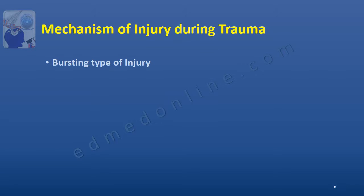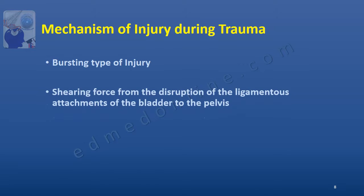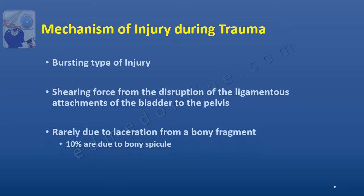So what causes this injury? It is basically a bursting type of injury which occurs because of the shearing force exerted on the bladder wall due to the disruption of the ligamentous attachments of the bladder to the pelvis. Very rarely it is on account of laceration from a bony fragment — in fact, only 10 percent of these injuries are due to a bony spicule.